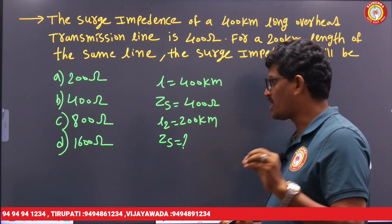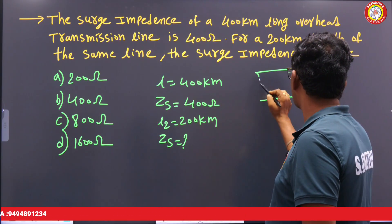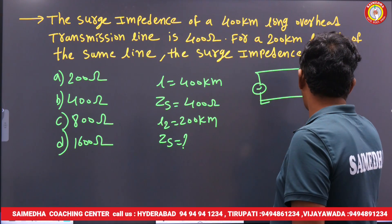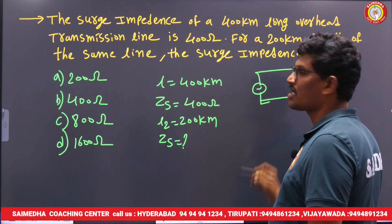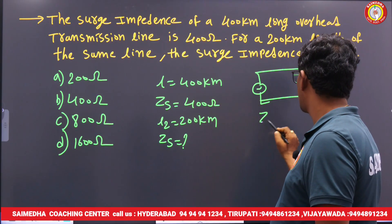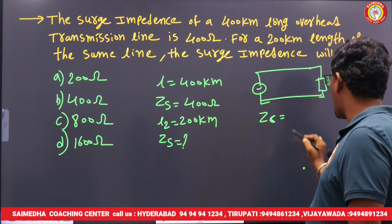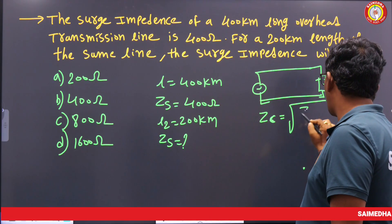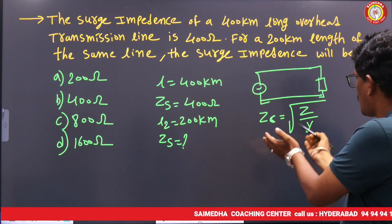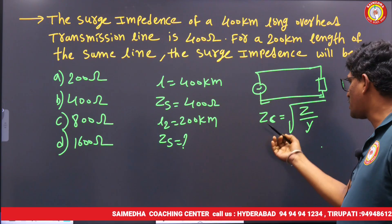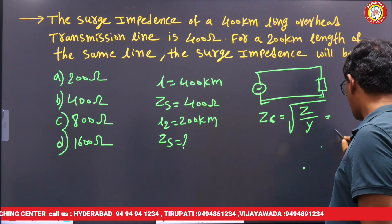In a practical transmission line, with source and load connected, one impedance value exists in the transmission — that is called characteristic impedance, generally denoted Zc. The formula for characteristic impedance is Zc = √(Z/Y).